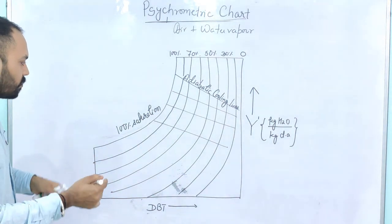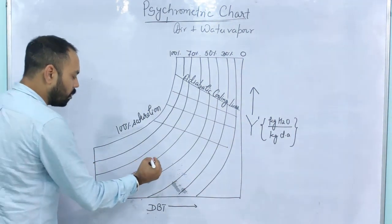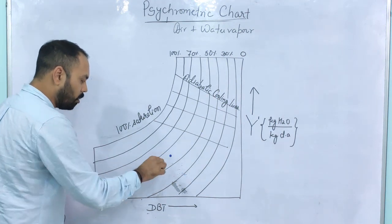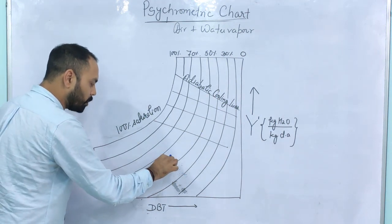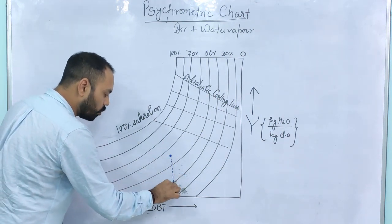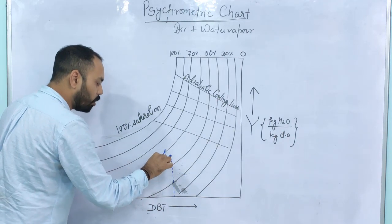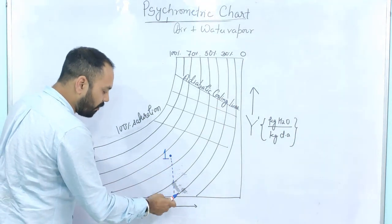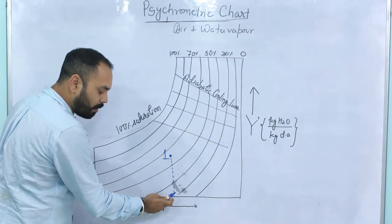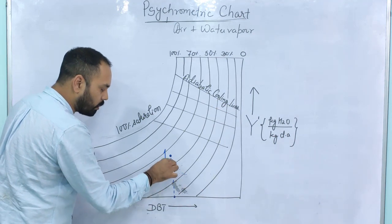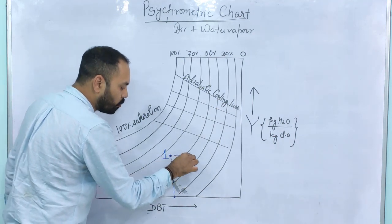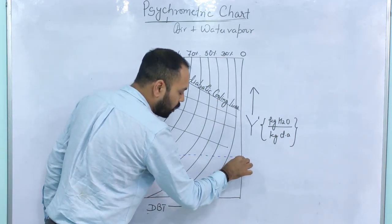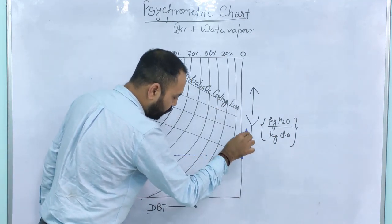Suppose I am initially present at a point. The air vapor mixture denoted by point 1 has a dry bulb temperature and an absolute humidity given by that particular point.